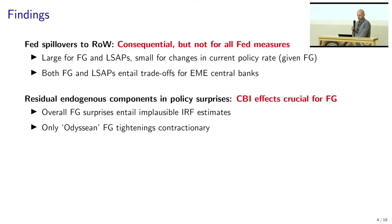The second set of findings is that accounting for residual endogenous components in policies or prices in these external instruments is important. Again, this is not a new finding — what we add is resolution. We show that this is particularly important in the context of forward guidance. If you don't account for these residual endogenous components, you will get effects for forward guidance that are implausibly small.